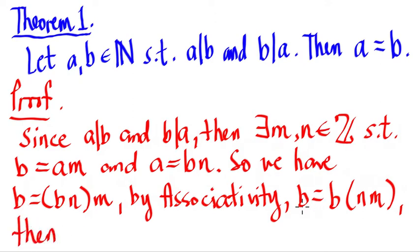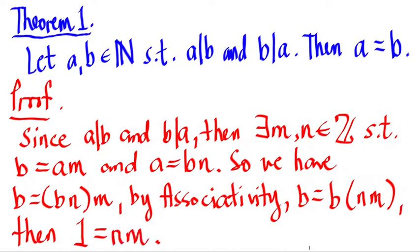Since b appears on both sides, we can divide the whole equation by b. This gives us 1 on the left-hand side equals nm. So 1 is equal to nm. Since nm equals 1, there are only two sets of factors that give us 1: either both n and m are positive ones (1 times 1 equals 1), or both are negative ones.